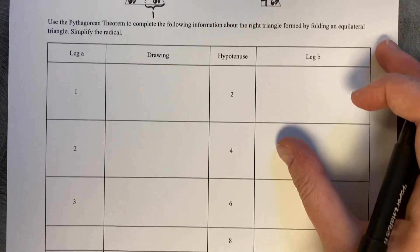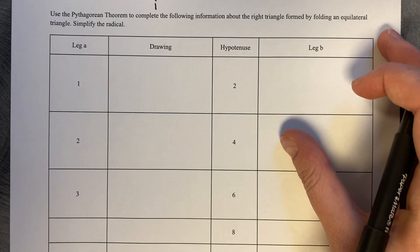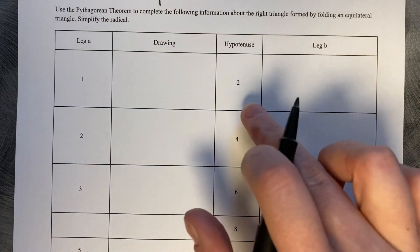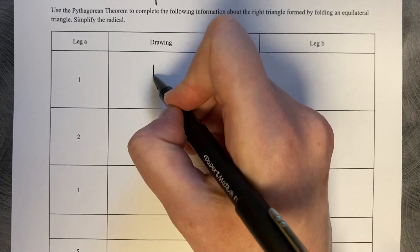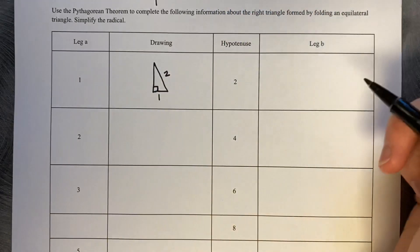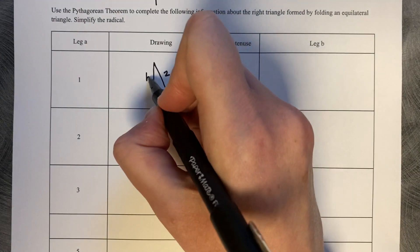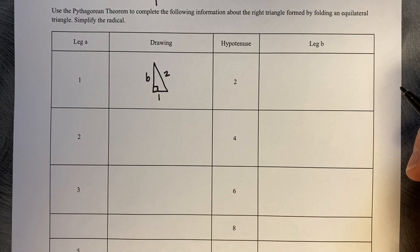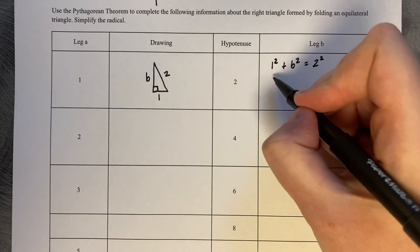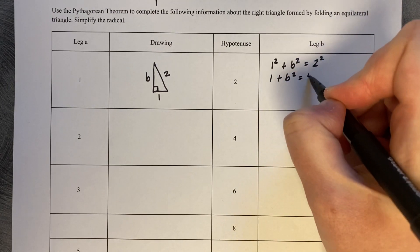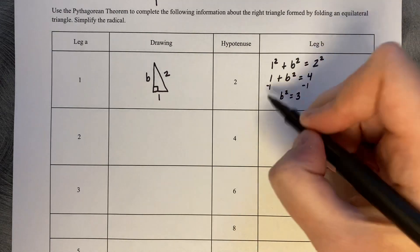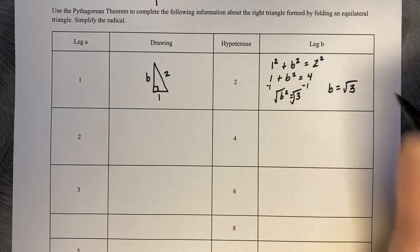Use Pythagorean theorem to complete the following information about the right triangle formed by folding an equilateral triangle. Simplify the radical. So if we have a leg length of 1 and a hypotenuse of 2, this length is 1, this length is 2, and we're trying to figure out how long is the second leg — leg length B. So we've got 1 squared plus B squared equals 2 squared. 1 plus B squared equals 4, minus 1, so B squared equals 3. The square root — so B equals the square root of 3.